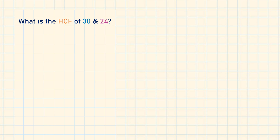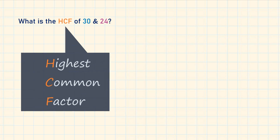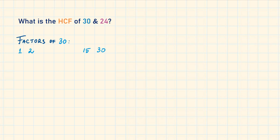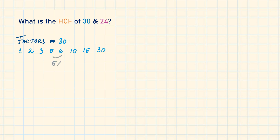Question 1: What is the HCF of 30 and 24? HCF stands for highest common factor, which means we need to find the highest number that is the same in both lists. For the factors of 30, we'll take factor pairs. 1 times 30 equals 30, so the first factor pair is 1 and 30. The next is 2 and 15, then 3 and 10, and finally 5 and 6.